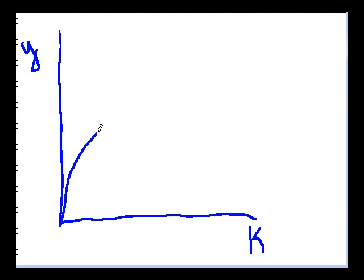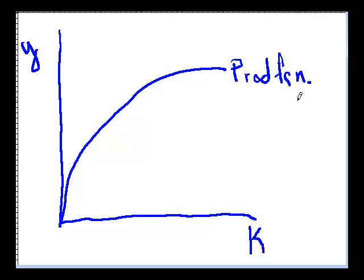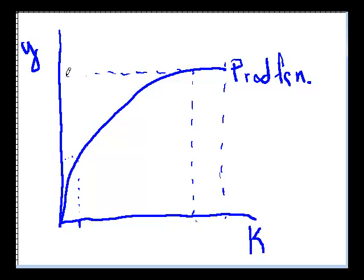The first thing we're going to do is draw a production function. The production function is increasing at a decreasing rate — it's going up all the way. The more capital you have, the more GDP you have. But when you get that first unit of capital, it makes a big difference, and when you get that last unit of capital, it doesn't make quite as much difference. That's what we mean by increasing at a decreasing rate.